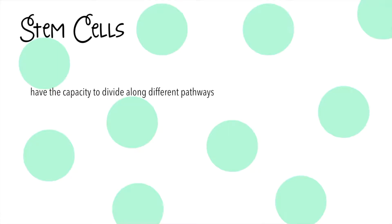This means stem cells have the potential to become different cell types, like muscle tissue or the cells of your internal organs, while differentiated cells have already reached their final structure. There are two main functions of stem cells: either to restore old cells or to differentiate into different cell types.